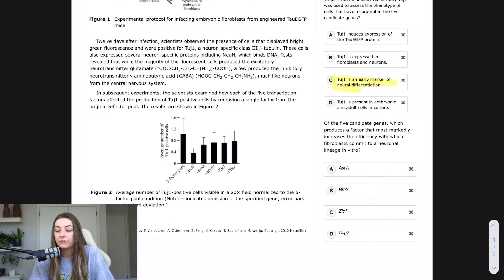The next question says of the five candidate genes, which produces a factor that most markedly increases the efficiency with which fibroblasts commit to a neural lineage in vitro. Again, let's break it down. Let's not get overwhelmed with the wordiness of this question. So, I'll start kind of from the end. I see where it says the efficiency with which fibroblasts commit to a neural lineage in vitro. That's what this whole experiment was about, right?